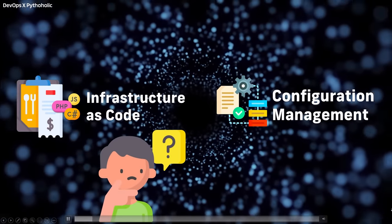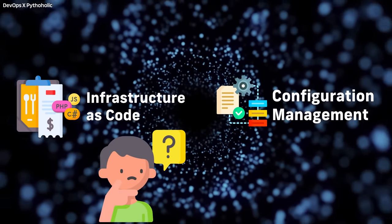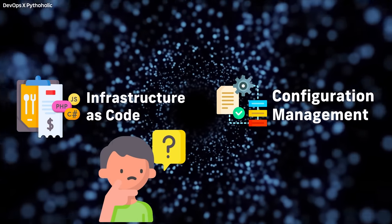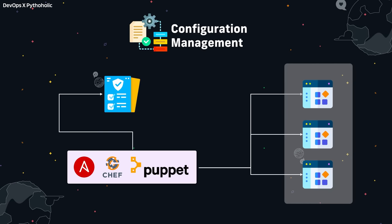You might still be thinking: what is the difference between IaC and configuration management tools? Configuration management is what the name suggests — it's about configuring our servers. It could be installing updates on servers, shutting down a list of servers, or matching a specific configuration to a list of servers.